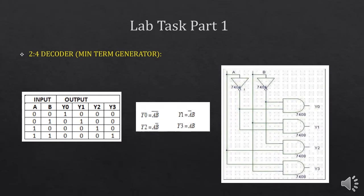Let's see the lab task part 1. In the first lab task, you have to implement a 2-to-4 line decoder using a maxterm generator. This is the truth table of the 2-to-4 line decoder. When the input is 0-0, the least significant output Y0 will be high. As it is working on positive logic, the output is indicated by 1.